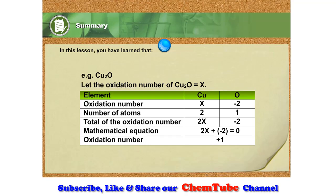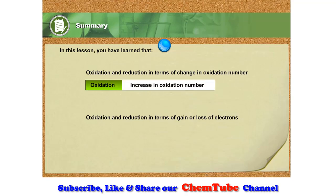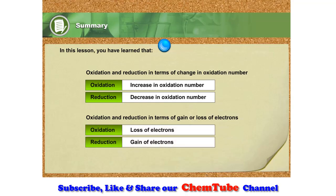You can use this template as guidance for calculating oxidation numbers of elements. Oxidation and reduction can also be defined in terms of change in oxidation number and electron transfer. The oxidation number of an element increases when it is oxidized. The oxidation number of an element decreases when it is reduced. Oxidation is a loss of electrons and reduction is a gain of electrons.